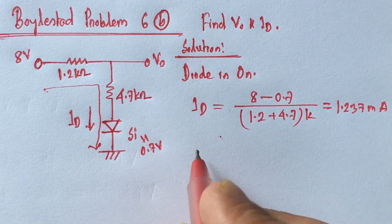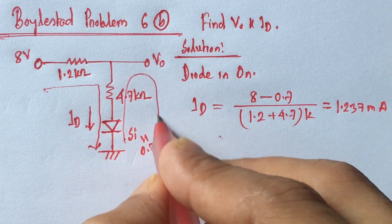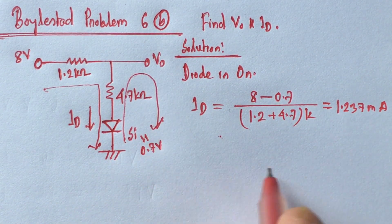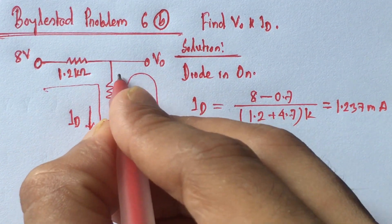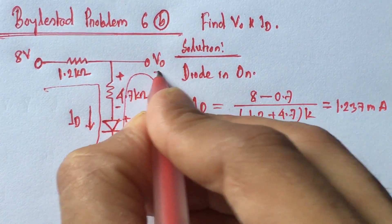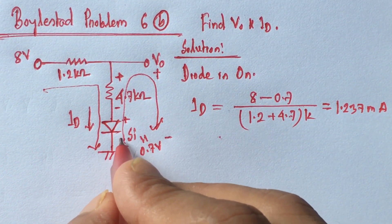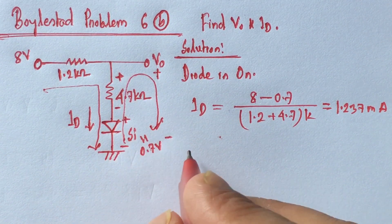Now we will find V0 by applying Kirchoff's voltage law throughout this path. This is plus, this is minus, and this is plus, this is minus, this will be plus and minus. So this is 0.7 volts. By running Kirchoff's voltage law, the equation will have minus 0.7...